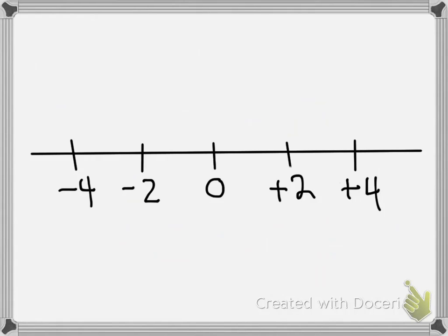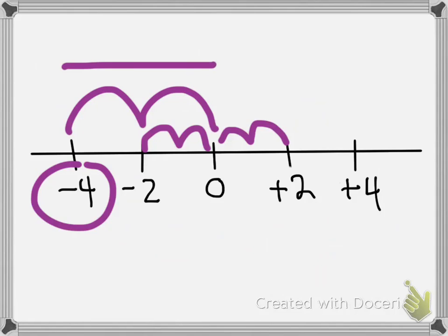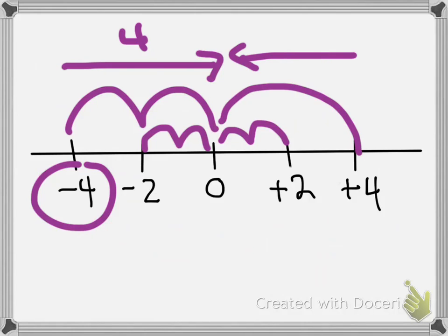So for example when you look at this number line you can see that the 2 would be one, two steps away from the zero and the negative 2 would also be one, two steps away from the 0. So those two are opposite integers: negative 2 and positive 2. Now you can also look at the 4 and say well I see that negative 4 would be two, four steps away from the zero and the positive 4 to the 0 is also going to be four steps. So those are opposite integers.